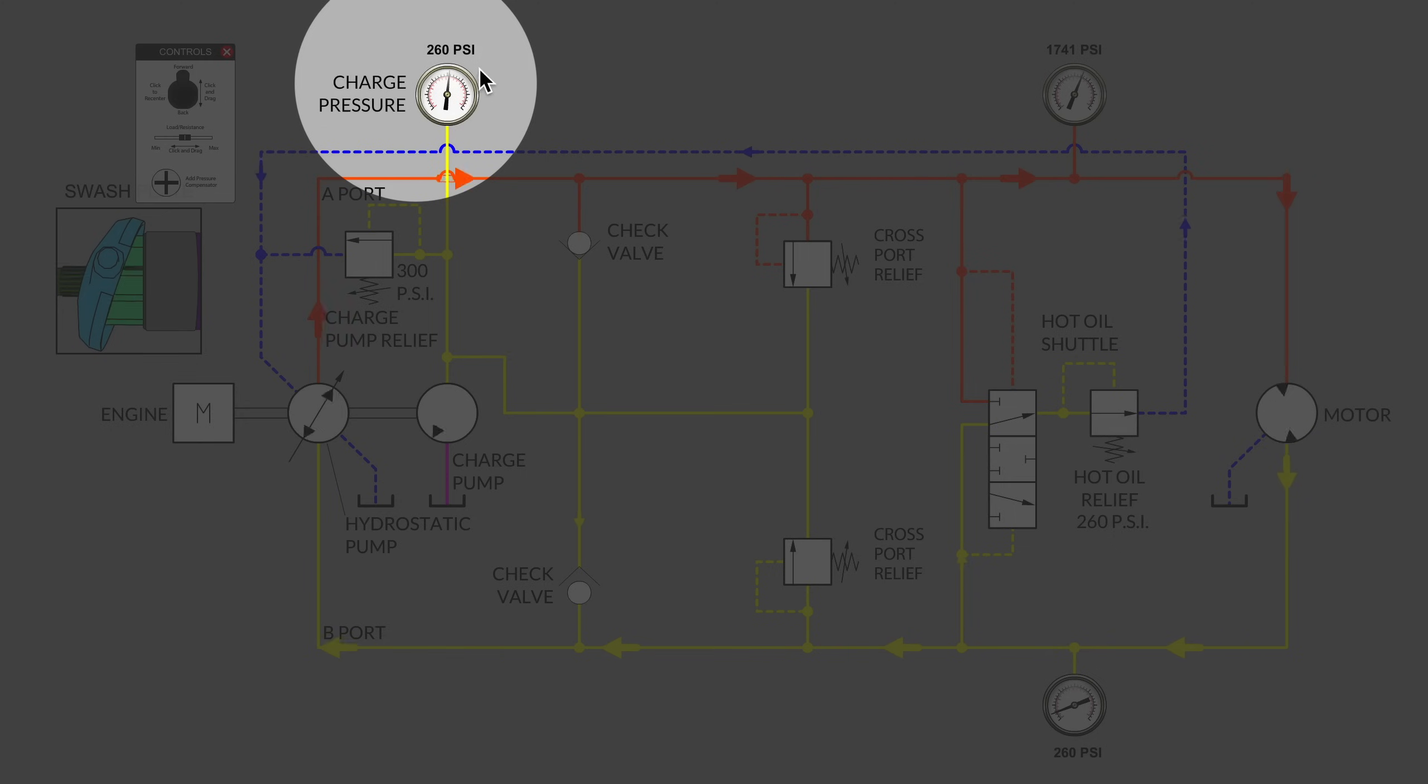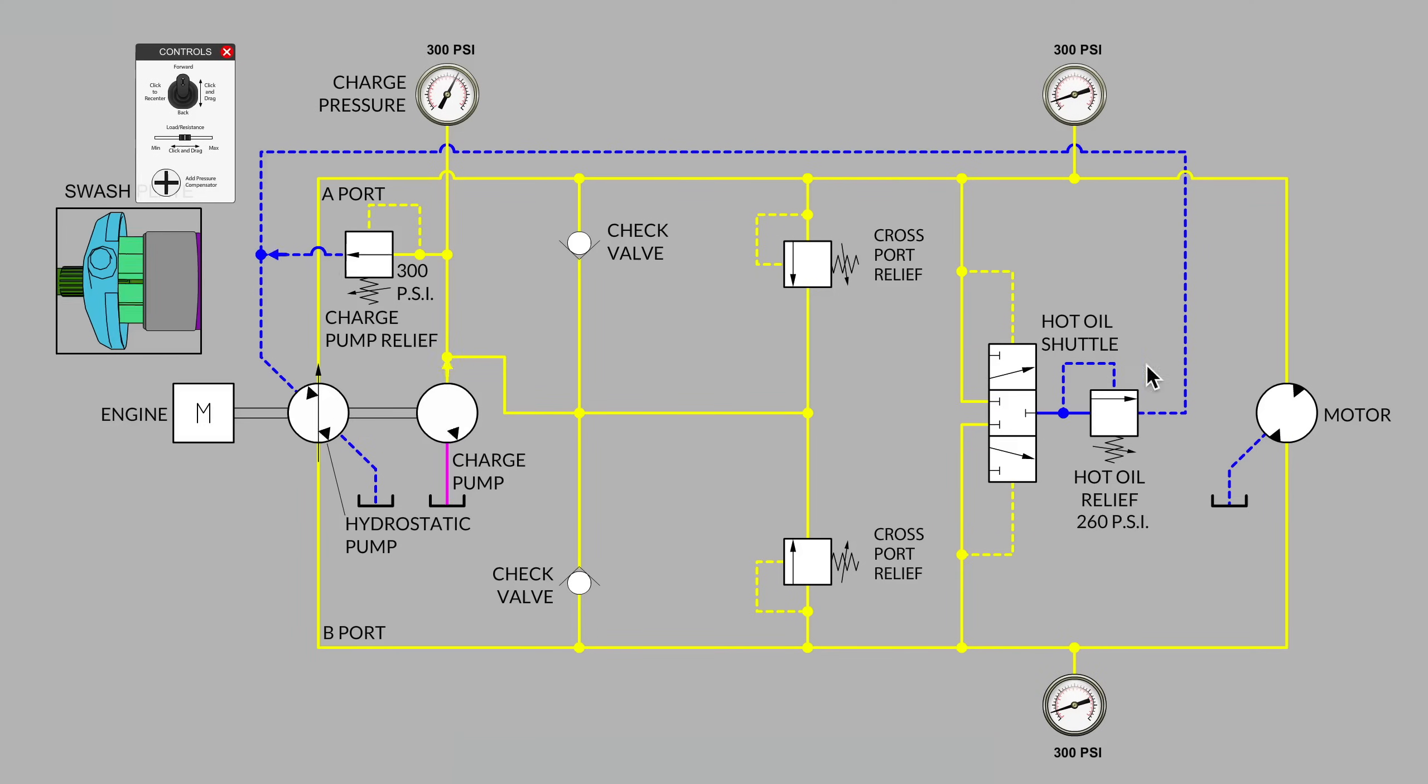Right now our charge pressure gauge is reading 260 psi. If I return the operating lever to the neutral position, watch that charge pressure gauge. It went up to 300 psi and we're not turning the motor right now.